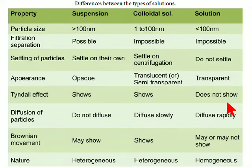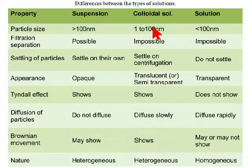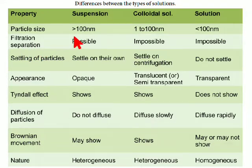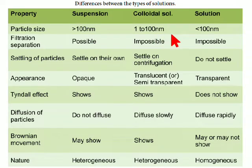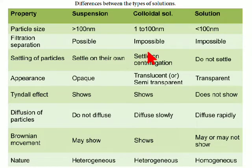The differences between suspension, colloidal solution, and true solution based on properties. The first property is particle size: suspension has greater than 100 nanometers, colloidal solution has 1 to 100 nanometers, and true solution has less than 100 nanometers. For filtration separation: it is possible in suspension, but impossible in colloidal solution and also impossible in true solution.